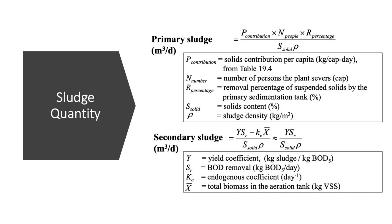The primary treatment is a physical and sometimes chemical process. Therefore, the production of sludge is linearly correlated with the service population of the wastewater treatment plant and the per capita solids contribution. Unlike the primary treatment, the secondary treatment involves biological degradation such as during the activated sludge process. Therefore, it is important to track the decomposition of organics in the form of biochemical oxygen demand (BOD), as well as the sludge yield per BOD consumed.